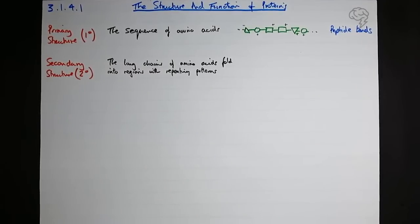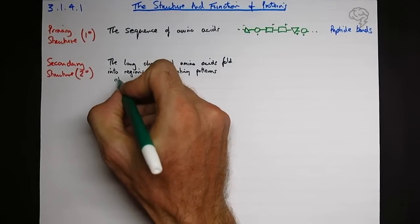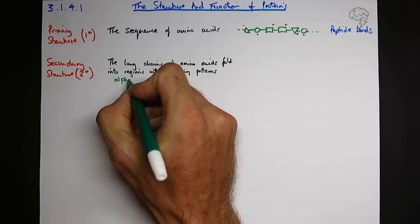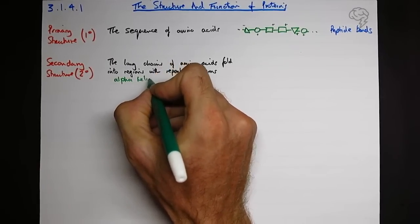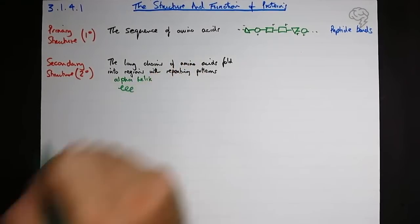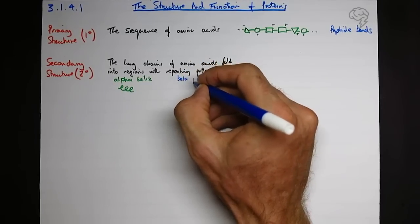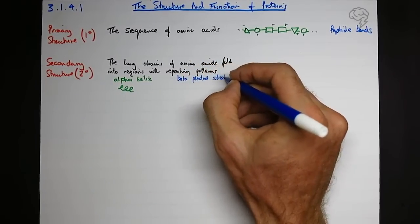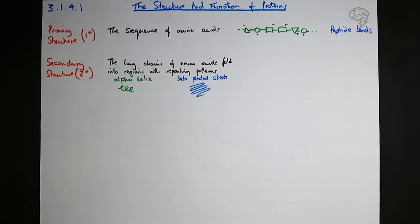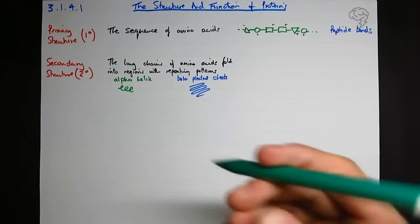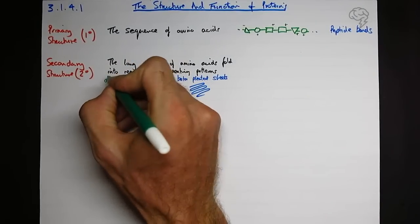Now there's two categories of these repeated patterns that you need to know about. One is the alpha helix or alpha helices, and the other are beta pleated sheets. And when I get around to drawing them, they're going to look like this.